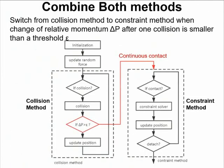So here is a flowchart that shows how my simulation program works. First, the program will enter in the collision method loop, but I will keep eyes on the change of the relative momentum after each collision. If this value is small enough, which means the contact is continuous, it will break to the next loop of the constraint method into detachment.